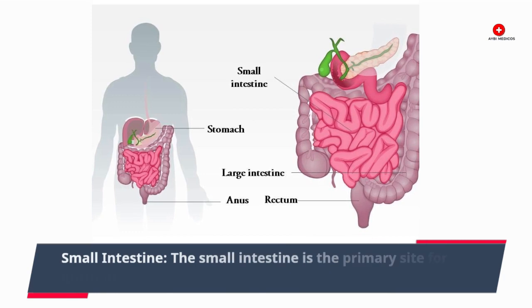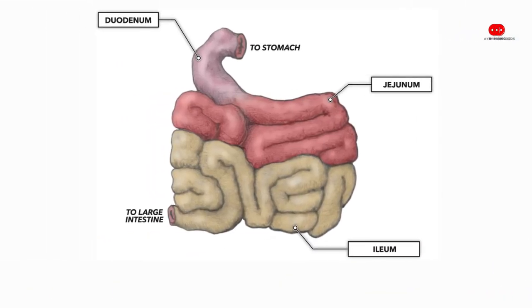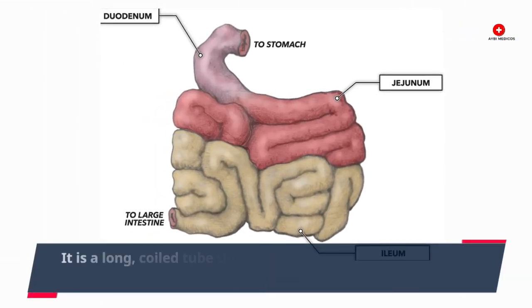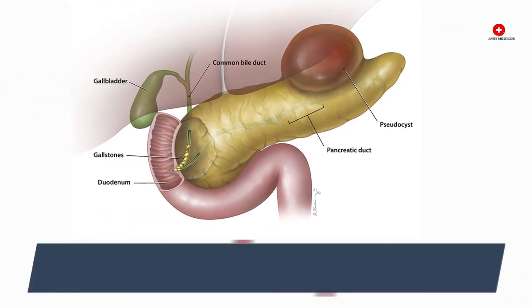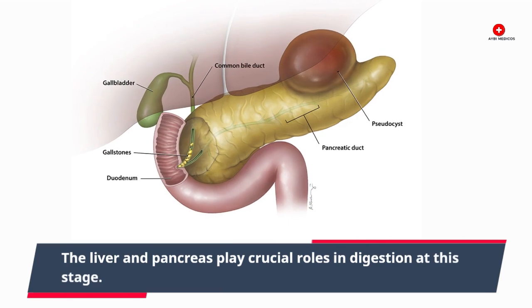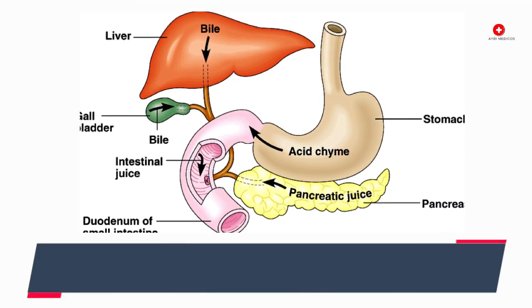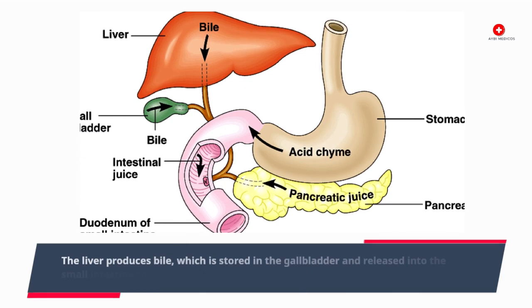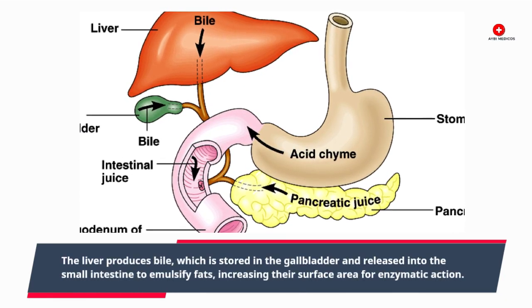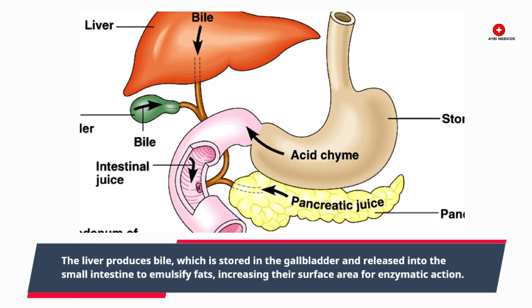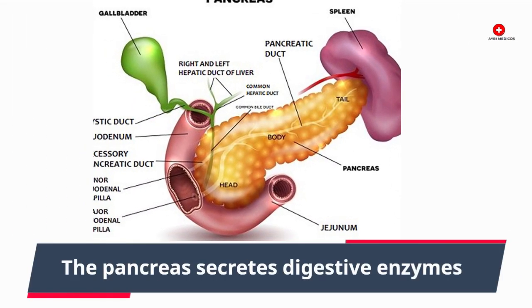Small intestine. The small intestine is the primary site for nutrient absorption. It is a long, coiled tube that receives chyme from the stomach. The liver and pancreas play crucial roles in digestion at this stage. The liver produces bile, which is stored in the gallbladder and released into the small intestine to emulsify fats, increasing their surface area for enzymatic action.